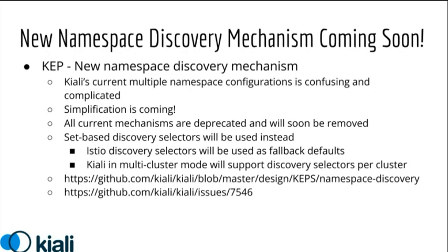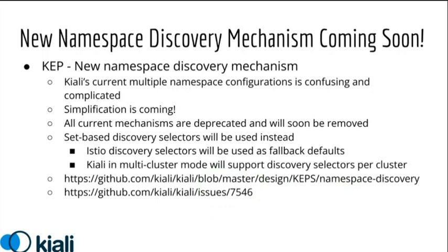In fact, the Istio discovery selectors will be our fallback defaults if a user does not configure discovery selectors in Kiali. Kiali in multi-cluster mode will also support discovery selectors per cluster, so in a multi-cluster scenario with different namespaces, you can tell Kiali about those different namespaces per cluster. This is coming soon — not in this release. There's a KEP proposal link and current issue 7546 where that work is being tracked. Stay tuned — it may land in one or two sprint releases.